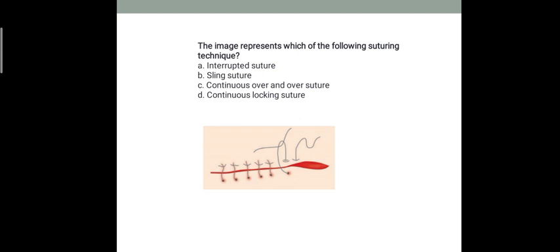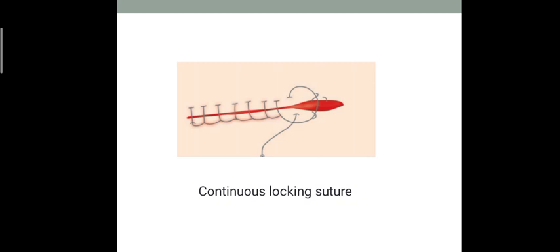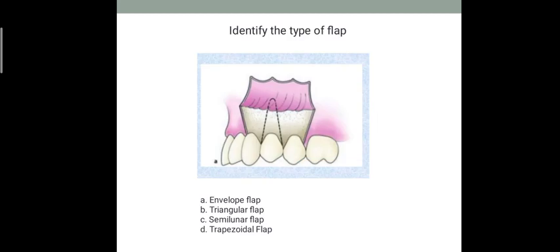Here's an MCQ reminder: when suturing, how much needle should be inserted into the skin or mucous area? Around 3mm - an important MCQ. What does this indicate? It's a continuous over-and-over suture, also known as watertight suture. I included different sutures in this video, not the simple horizontal mattress, vertical mattress, or interrupted sutures because we know those. This is continuous locking suture - you can see the locking between the two sutures.